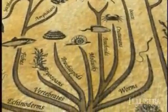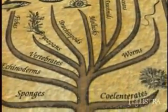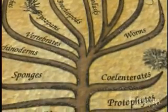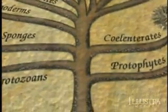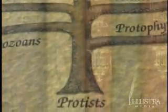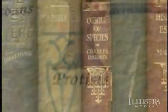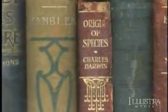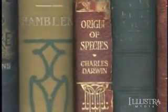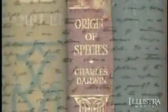But when it came to the base of the tree, which represented the origin of the first life — the first living cell — Darwin had very little to say. In fact, in the Origin of Species, he didn't even address the question of how life might have originated from non-living matter.